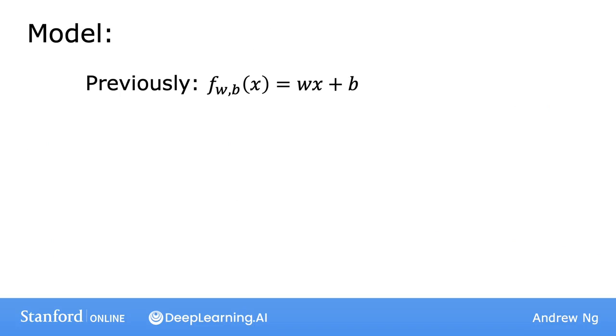Now that we have multiple features, let's take a look at what our model would look like. Previously, the model was f_w,b of x equals wx plus b, where x was a single feature, a single number. But now with multiple features, we're going to define it differently. The model will be f_w,b of x equals w1 x1 plus w2 x2 plus w3 x3 plus w4 x4 plus b.